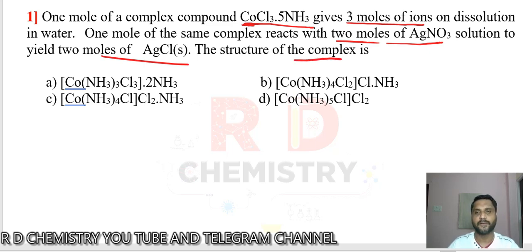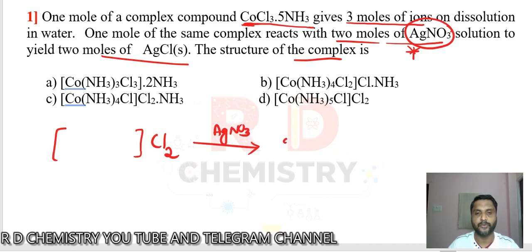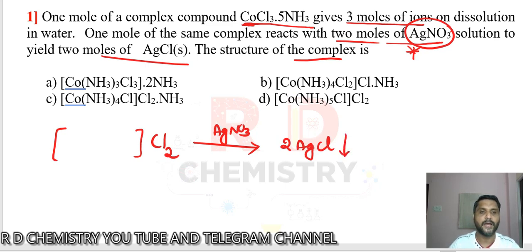The important technique here is the silver nitrate test. 2 moles are required, which means there should be 2 chloride ions outside the coordination sphere acting as counter ions, which would react with AgNO3. That gives 2 moles of AgCl precipitate. We have 2 chlorides in option C and 2 chlorides in option D.